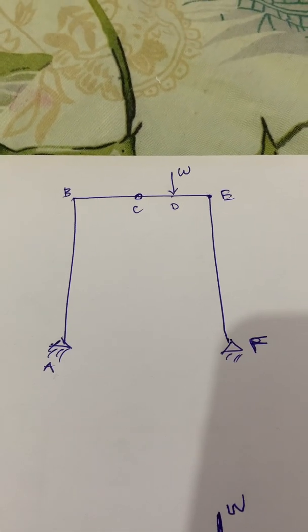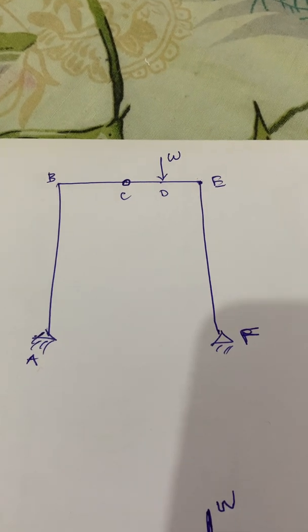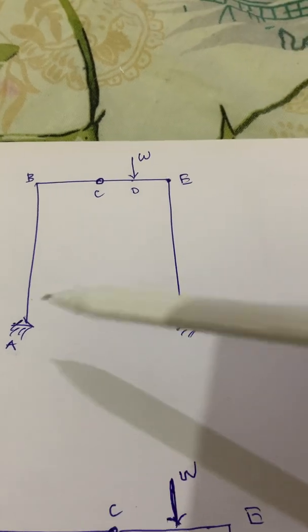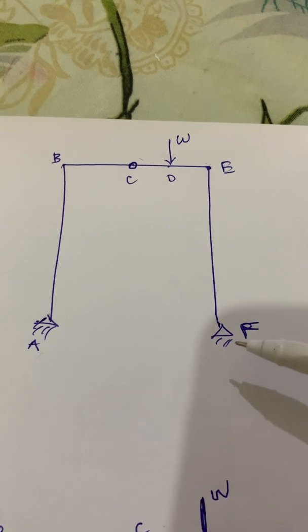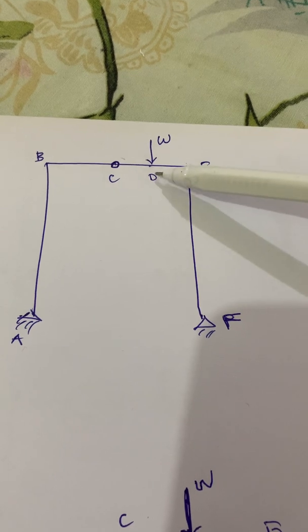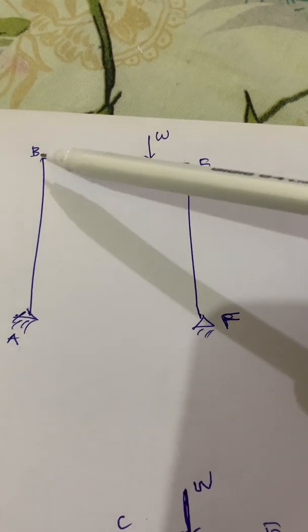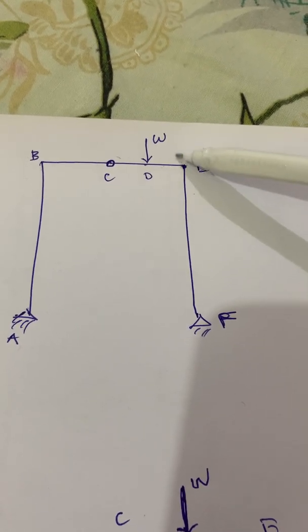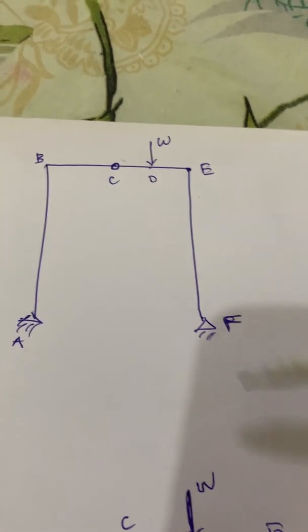Let us now look at a somewhat more complex problem which introduces a number of new ideas. The structure to be considered is a symmetrical portal frame with three hinges — one, two, three — hinges at A, C, and F. This is called a three-pinned portal. The load W is placed at D unsymmetrically. Corners B and E are rigid joints between the horizontal and vertical members, so they can transfer forces and moments.